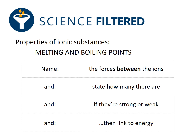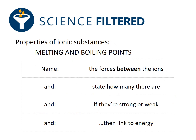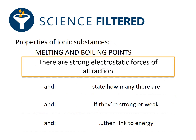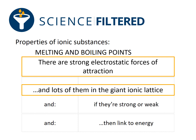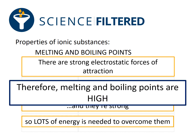Finally, I need to link that to energy. There are strong electrostatic forces of attraction in a giant ionic lattice. There are lots of them, and they are strong, which means lots of energy is needed to overcome them. Therefore, melting and boiling points are going to be high for ionic substances.